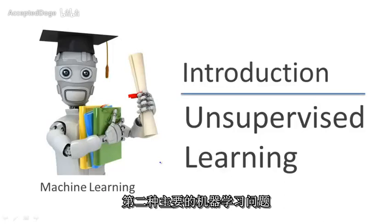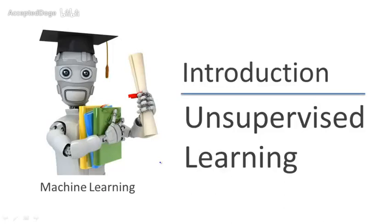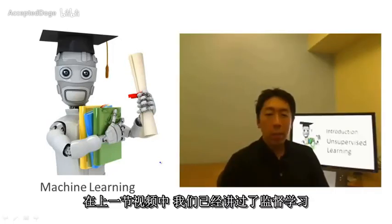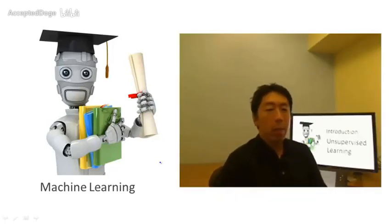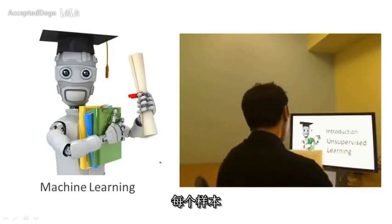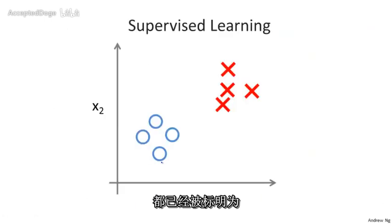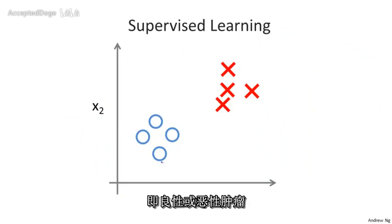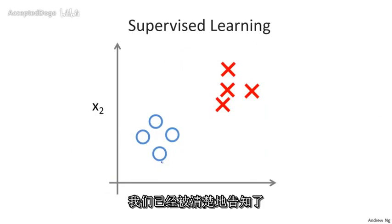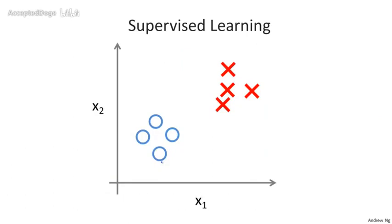In this video, we'll talk about the second major type of machine learning problem called unsupervised learning. In the last video, we talked about supervised learning, where each example was labeled either as a positive or a negative example — whether it was a benign or malignant tumor. So for each example in supervised learning, we were told explicitly what is the so-called right answer, whether it's benign or malignant.